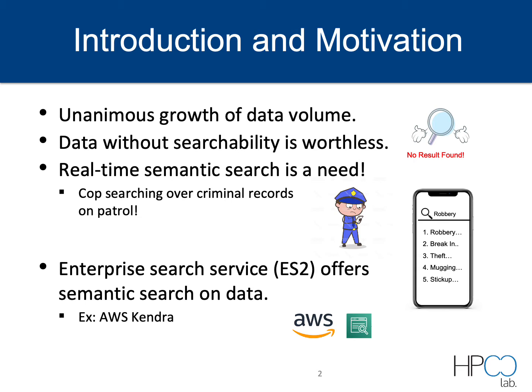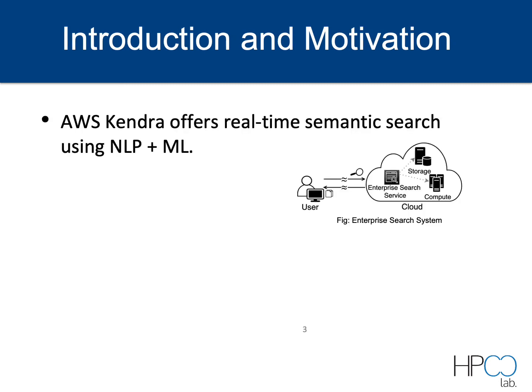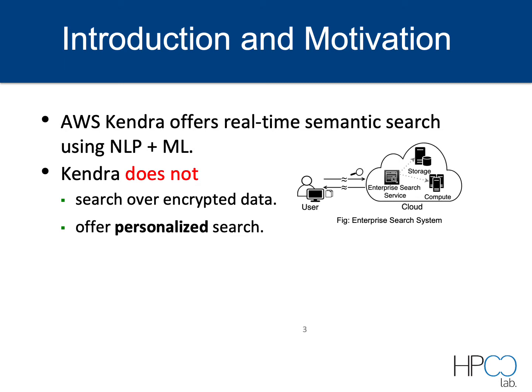To facilitate that, Enterprise Search Service offers semantic search on data. One example of Enterprise Search Service is AWS Kendra, which is offered by Amazon. AWS Kendra offers real-time semantic search by leveraging natural language processing and machine learning techniques. However, based on our investigation, we found that Kendra does not search over encrypted data.